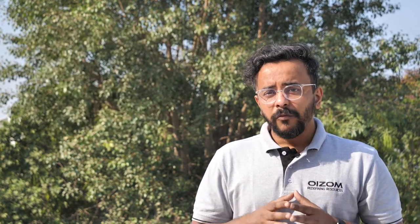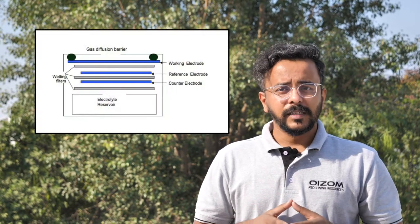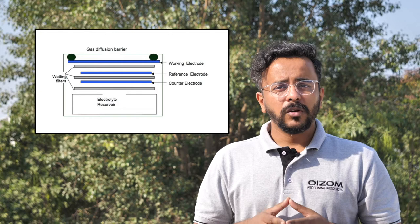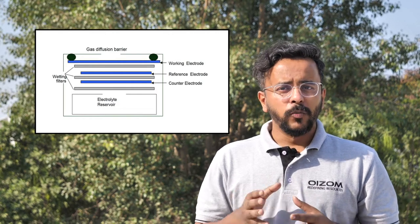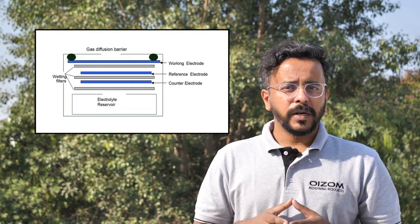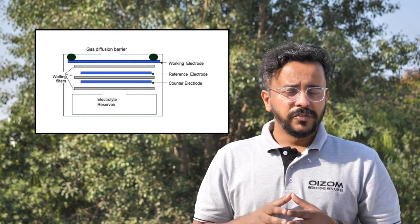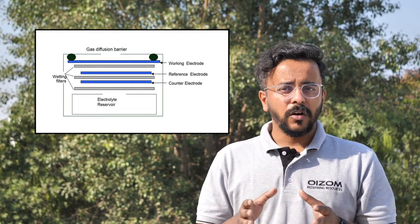At OISOM, we measure Nitric Oxide and Nitrogen Dioxide on principles of electrochemical sensing. It operates based on diffusion of NO and NO2 molecules into the respective sensor, which results in the production of an electrical signal proportional to the Nitric Oxide and Nitrogen Dioxide concentrations respectively.